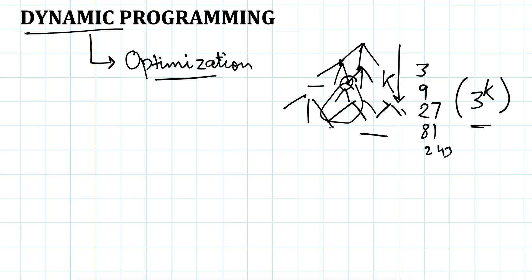The leaf nodes represent the solutions, so we will have 3 to the power k possibilities and we need to compare each of these. We can solve this better with dynamic programming — since we have already solved a sub-problem, when it is encountered a second time we can skip that entire subtree. Similarly for other repeated trees.